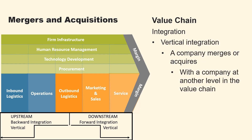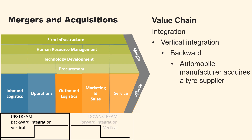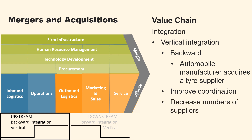Vertical integration happens when a company merges with or acquires a company at another level in the value chain. For example, when an automobile manufacturer acquires a tyre supplier, it engages in backward vertical integration. This approach can reduce costs, improve coordination, and secure the supply chain. A company can decrease the number of its suppliers by acquiring them, thereby streamlining the supply chain.